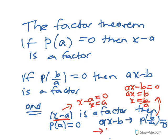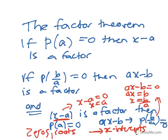The zeros will be where the x-intercepts are. Zeros have a few names — they're called zeros, they're called roots, and they're the x-intercepts where they cut the x-axis.